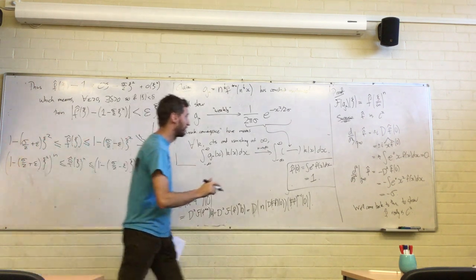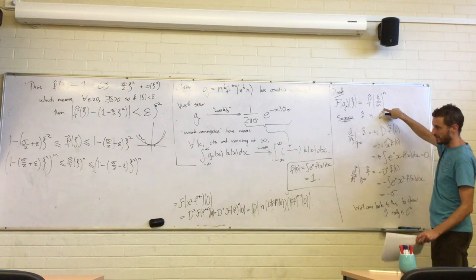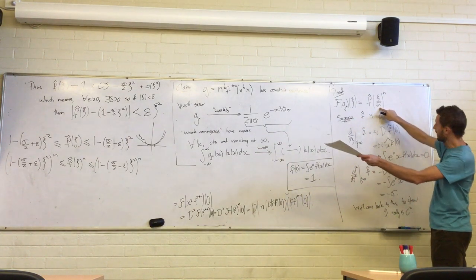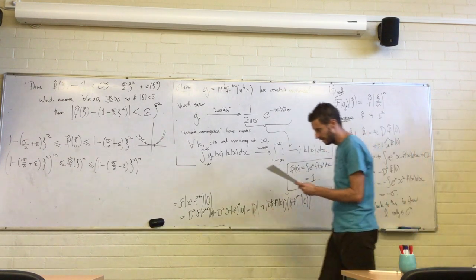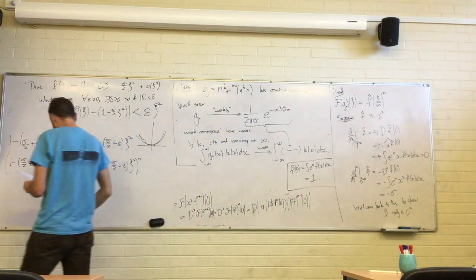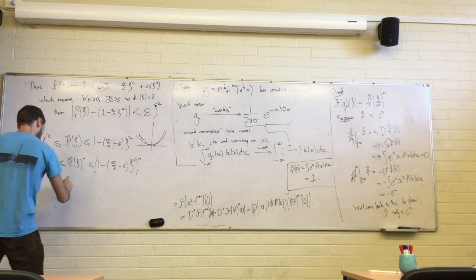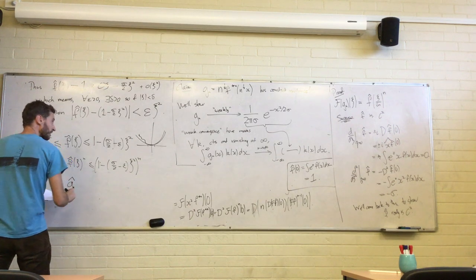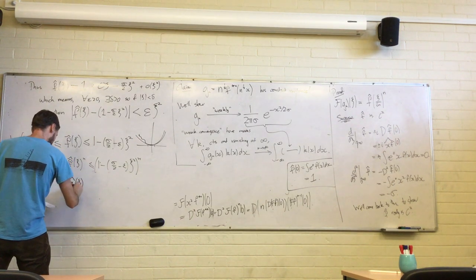So we can write: 1 minus (sigma²/2 + epsilon)·xi² ≤ f-hat(xi) ≤ 1 minus (sigma²/2 - epsilon)·xi². And then we can take all this and raise it to the nth power.